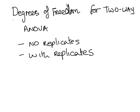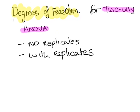In this presentation we're going to look at 2A ANOVA, specifically the matter of degrees of freedom. We're going to look at two possible cases: 2A ANOVA with no replicates, and 2A ANOVA with replicates — that is to say, with an interaction effect as well as the main effects.